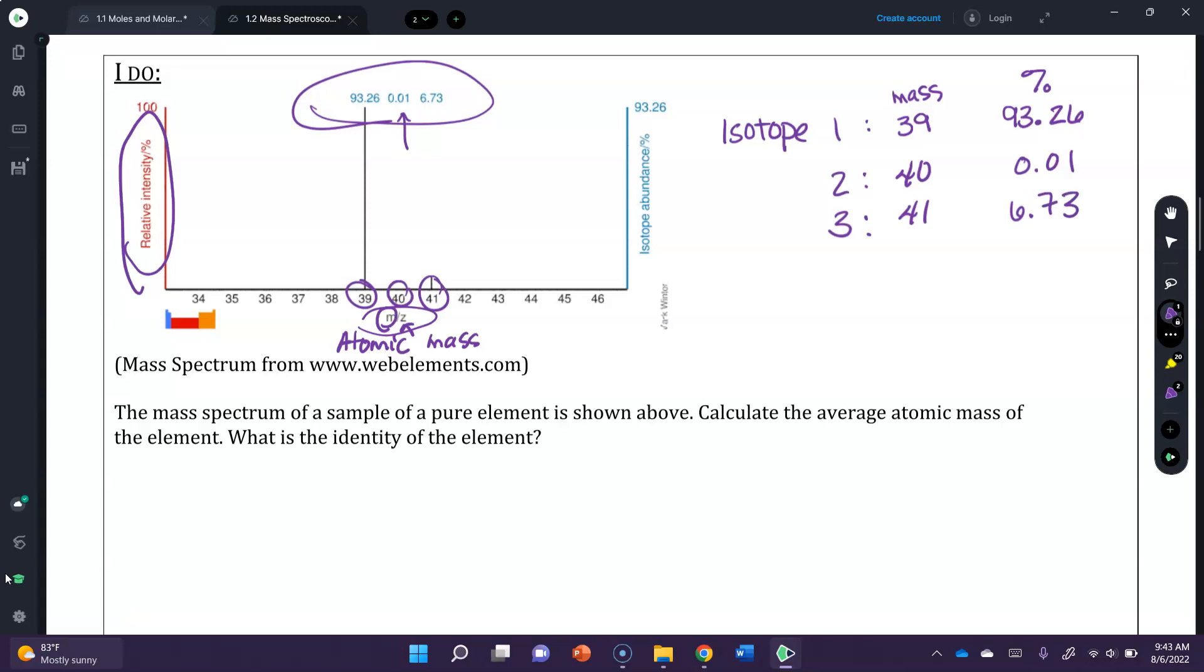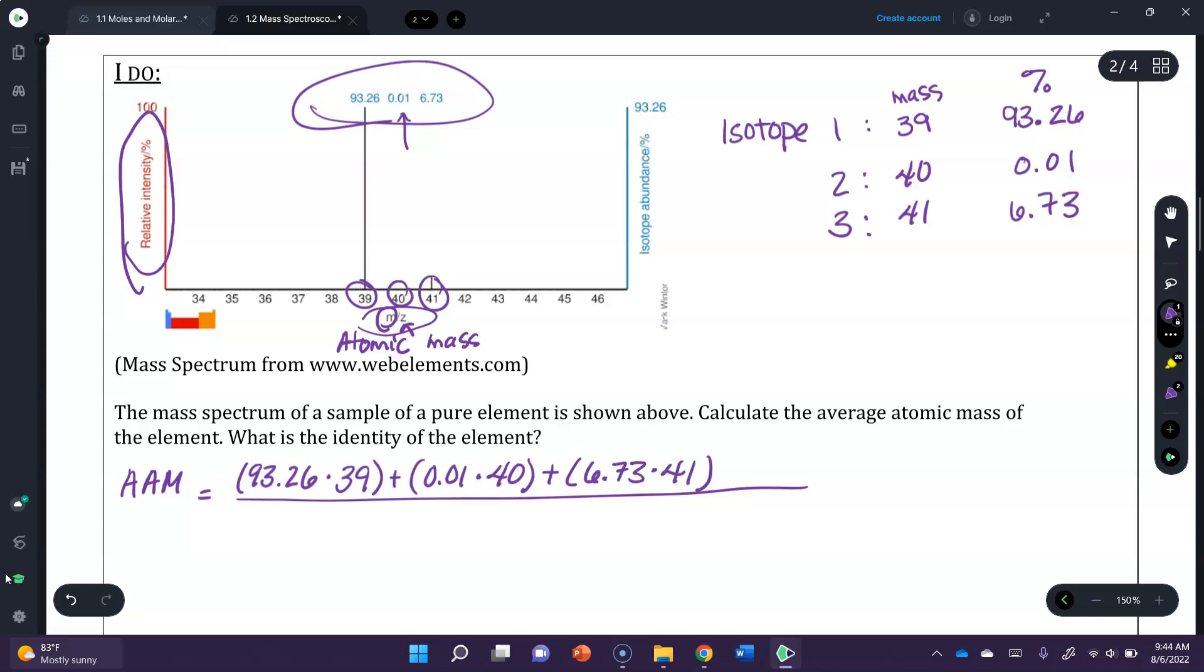So now using the equation on the previous page, we see that the average atomic mass is going to be equal to, I'm going to draw a big line, the percent, so 93.26. I'm going to do each one in order. So the first isotope is 93.26 times 39, plus the second isotope's percent, 0.01, times its mass, 40. And then the third isotope's percent, 6.73 times 41. Now it does not matter which order you do these in, just that you partner or pair up each mass with the correct percent, that you're adding them together to get a number, and then you divide it by 100. So that's our last little bit, is to divide it by 100.